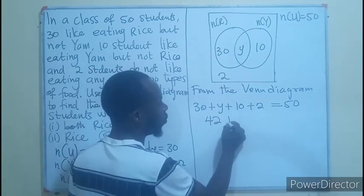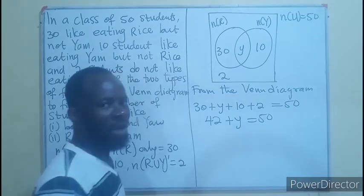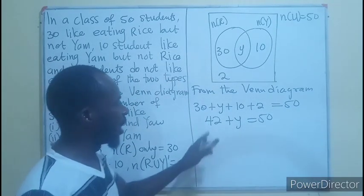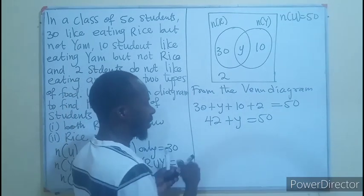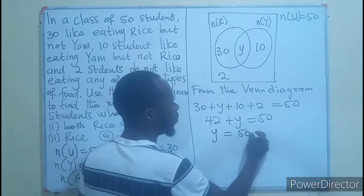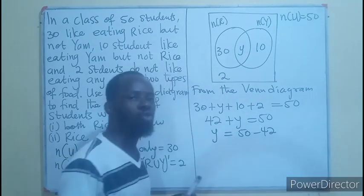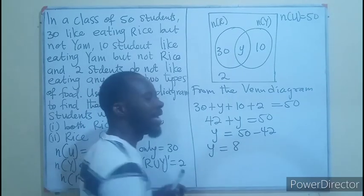We have 42 plus Y equals to 50. Since we are looking for Y, we subtract 42 from both sides. If I put 42 here, if I subtract, I will leave only Y, then 50 minus 42. That will give us Y equals 8.